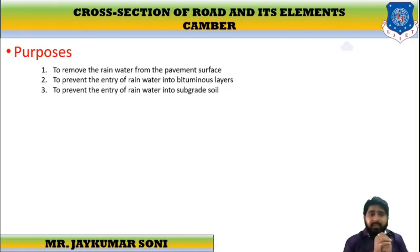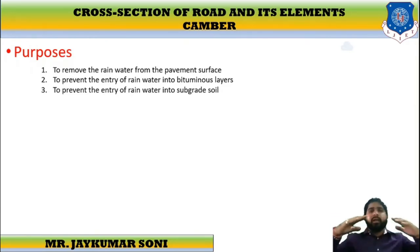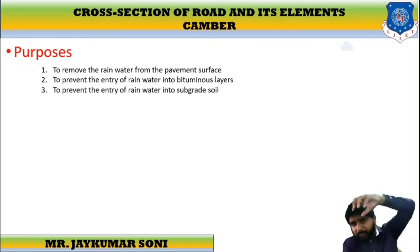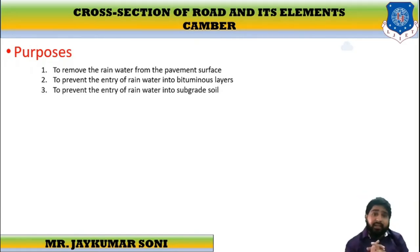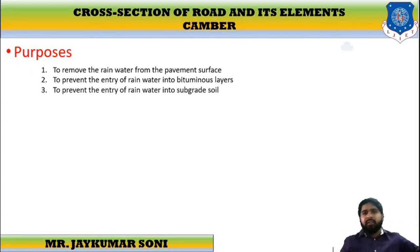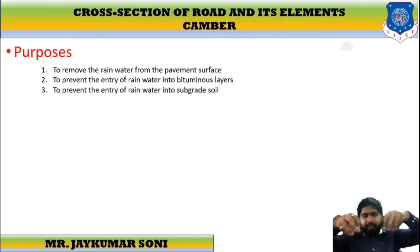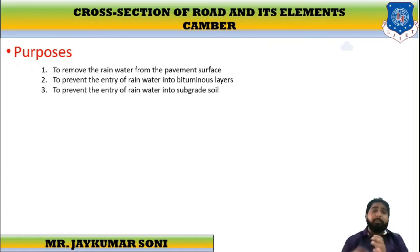If we discuss about the purposes, there are three main purposes. First is to remove the rainwater from the pavement surface — if the slope is provided, the water can be drained off automatically. It also prevents the entry of rainwater into the bituminous layers and into the subgrade soil. There are four layers: subgrade layer, subbase layer, base layer and surface layer. The rainwater will not percolate into the lower layers; it will be directly drained off from the surface.